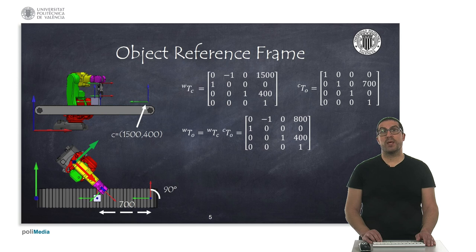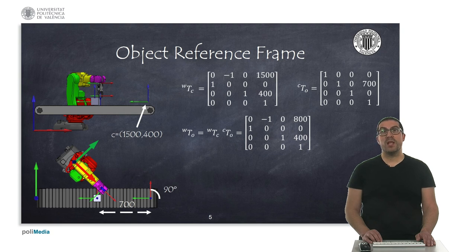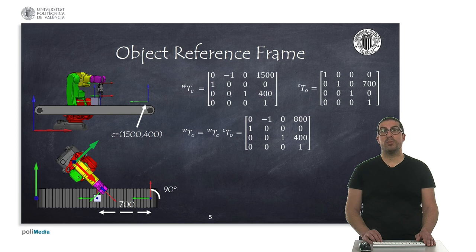With that information, we can obtain the transformation matrix T_wc. On the other hand, the object is shifted 700 mm in the y-axis with respect to the conveyor belt reference frame, without being rotated, which leads to the transformation T_co. Therefore, we can get the transformation T_wo — the transformation of the object with respect to the wall frame — just by multiplying the previous transformations in the right order, obtaining the resulting transformation as shown.